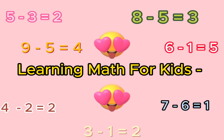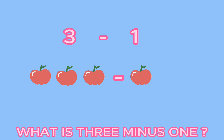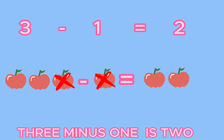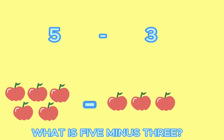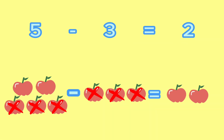Easy learning for kids. What is five minus three? Five minus three is two.